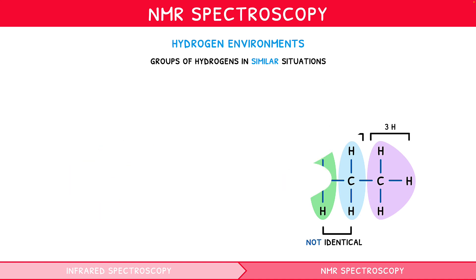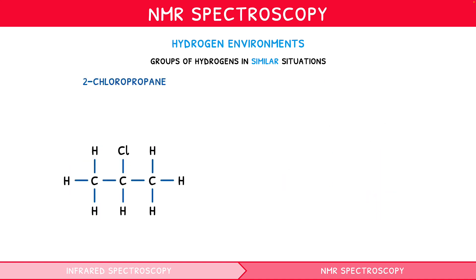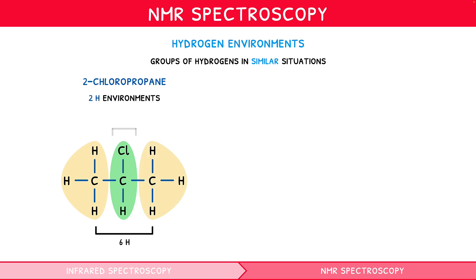Let's change this to 2-chloropropane. It consists of three hydrogen groups: CH₃, CH, and CH₃. However, since the first and last CH₃ groups are both adjacent to a CH–Cl, they are identical. Thus, 2-chloropropane contains two hydrogen environments, containing six and one hydrogens each.